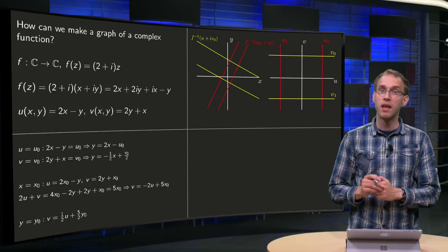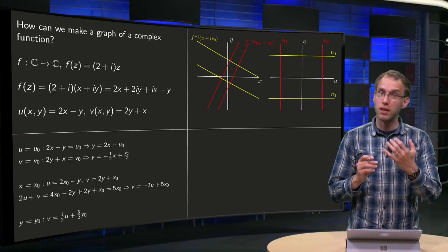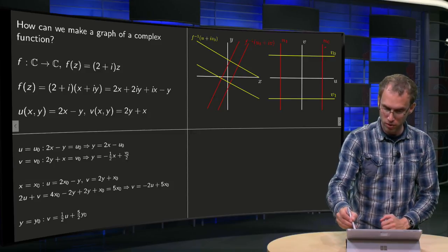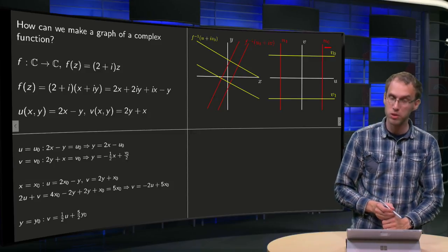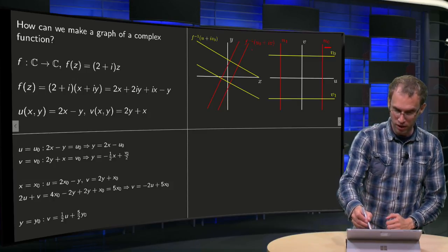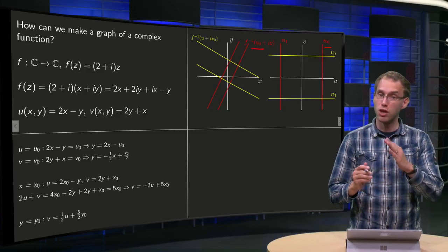So how does that look in the xy plane? So here we have our uv plane with u not constant, so the inverse image of those curves are over here.